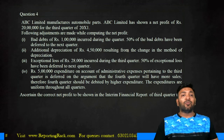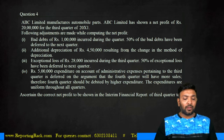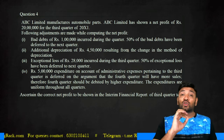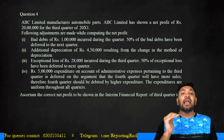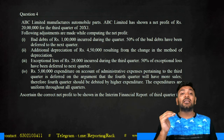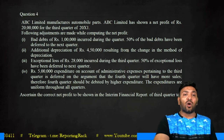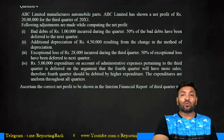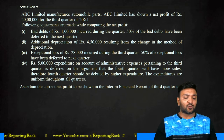He did not consider 50% of bad debts — that is 50,000. Therefore 20 lakhs should be reduced by 50,000. An additional depreciation of 4 lakh 50,000 has resulted due to a change in the method of depreciation — this should be considered in the current quarter. An exceptional loss of 28,000 was incurred in the third quarter; 50% of the exceptional loss has been deferred to the next quarter, which is not possible — so minus 14,000.